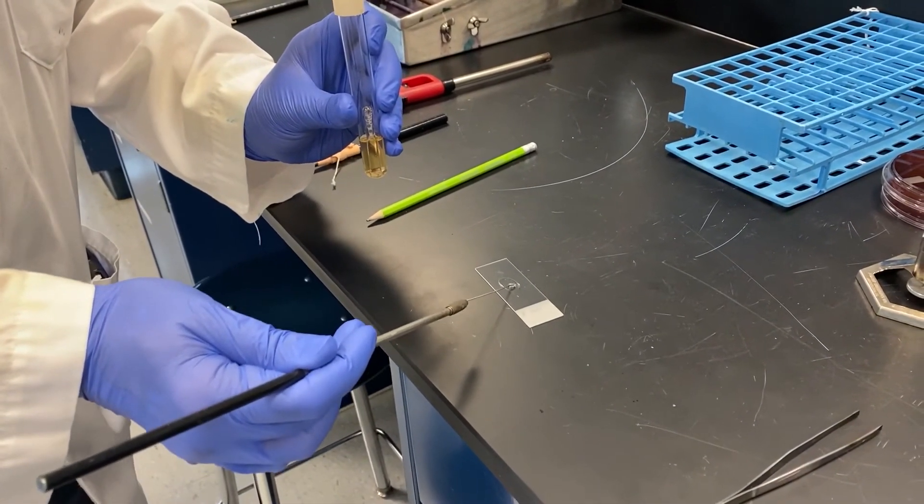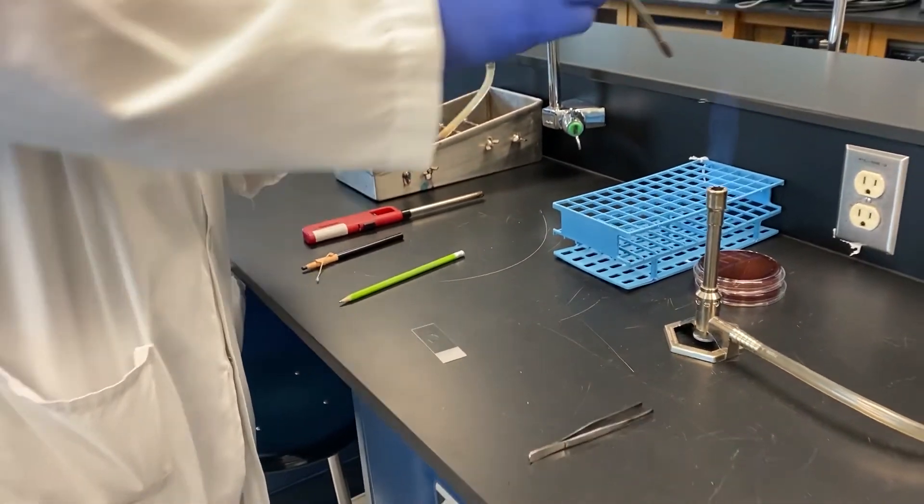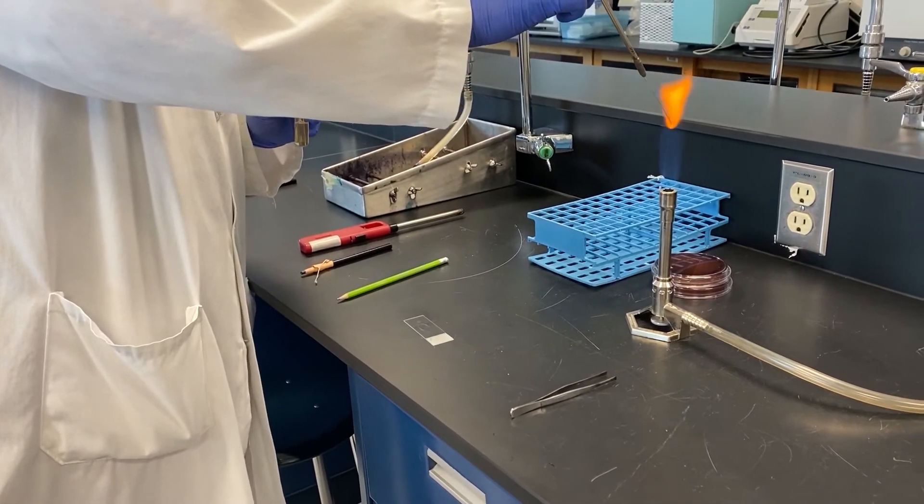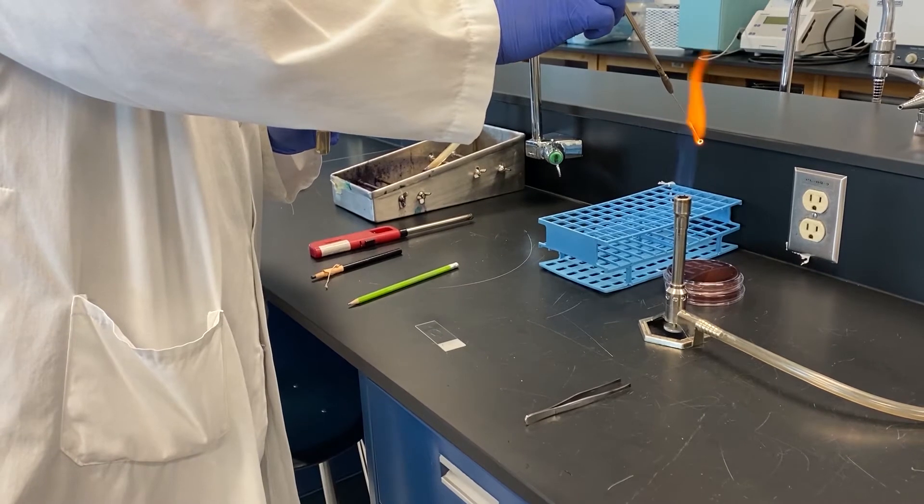Here you can see the culture being applied to the middle of the wax circle on the slide. Coordinating the sterilization of the loop, removal of the culture cap, and flaming the mouth of the tube will feel awkward at first. But with a little practice you will get used to it.